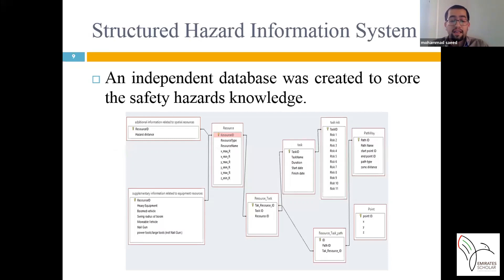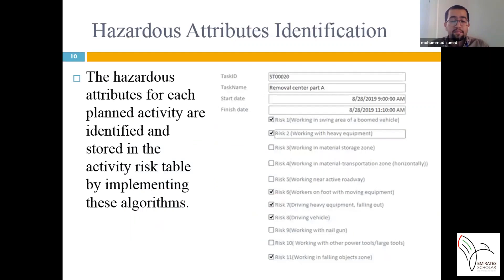The desired data was extracted from the generated 4D BIM model and stored in the created database. Additionally, some data was also taken from the user. The algorithms for identifying each hazardous attribute were implemented using information system capabilities to write queries. The hazardous attributes for each planned activity are identified and stored in the activity risk table. The output of the developed information system is a risk table showing the identified or non-identified hazardous attributes for each activity. The figure illustrates a sample form designed to display this information after analyzing the case study project.